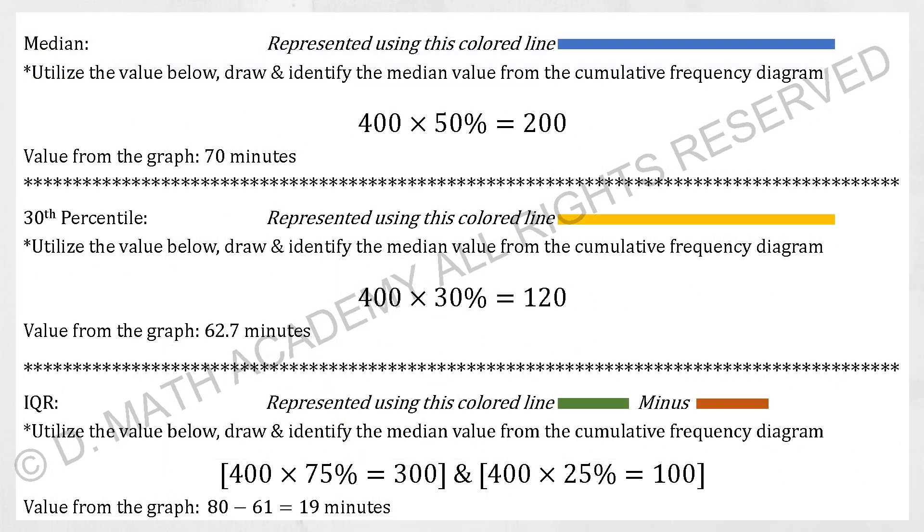Whereby for the next one, it will be interquartile range. I use the green line and red line to represent it. So 400 times 75%, I get 300.